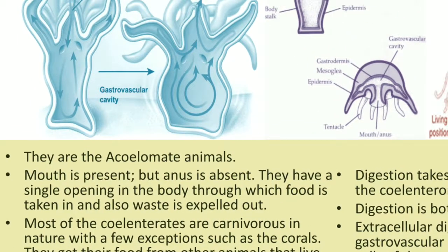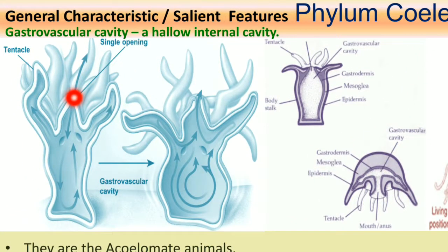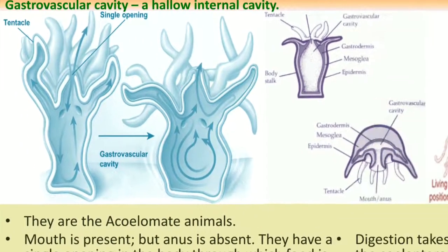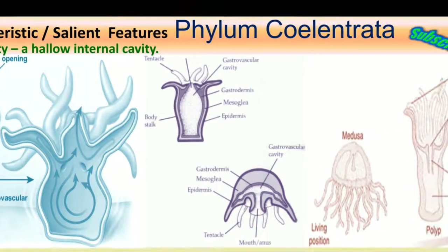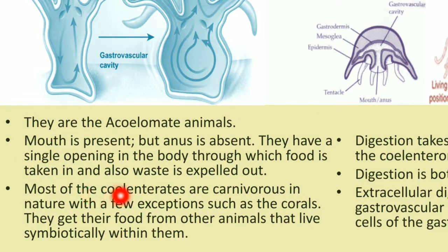The mouth is present but the anus is absent. They have a single opening in the body through which food is taken in and waste is expelled out. You can observe this in the diagrams - food is engulfed through the mouth, digestion takes place, and waste is thrown out through the same opening. The mouth and anus are the same opening, performing both functions.